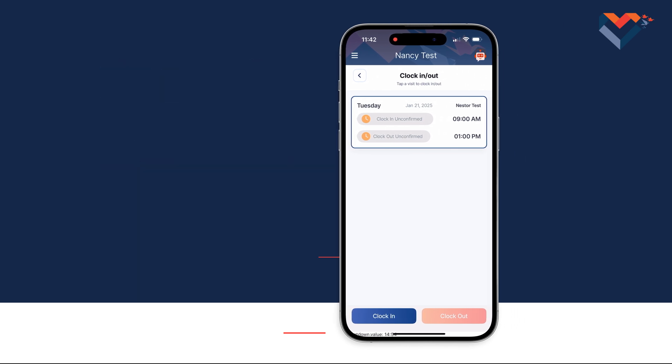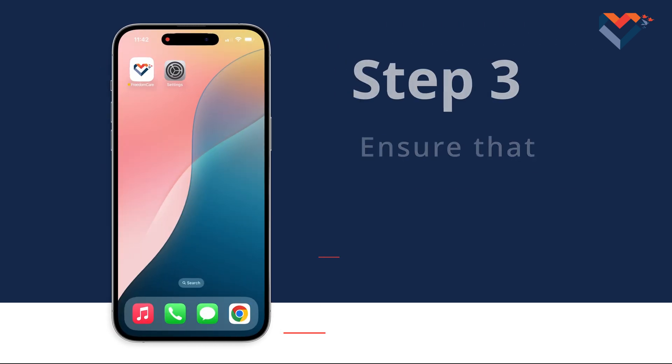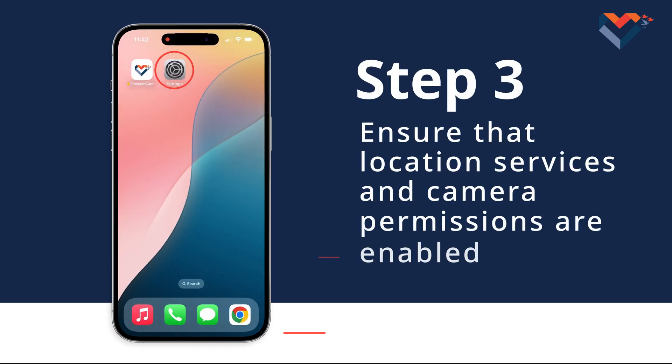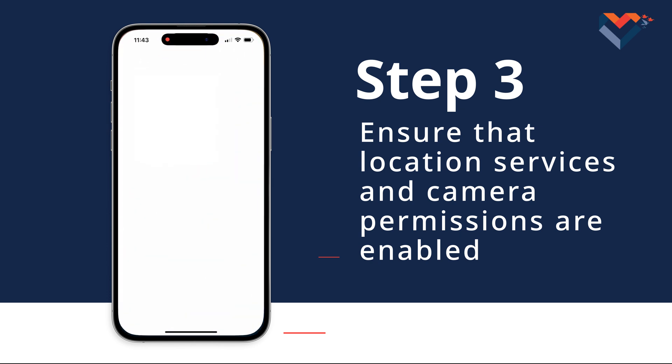Step 3: Ensure that location services and camera permissions are enabled. If you're unsure how to do this, check out our video, "How to Turn on Permission Settings for the Freedom Care app."